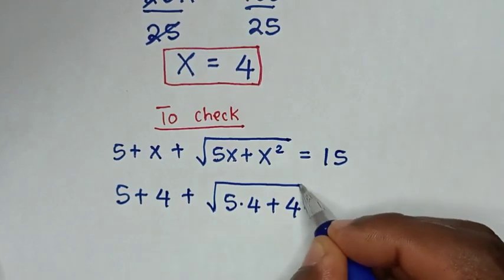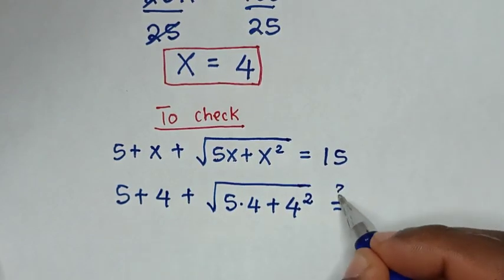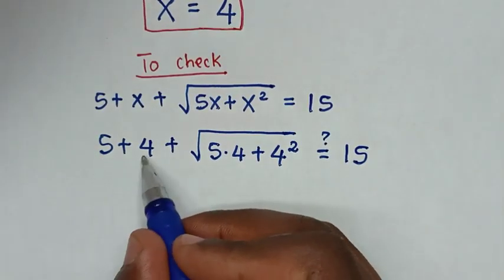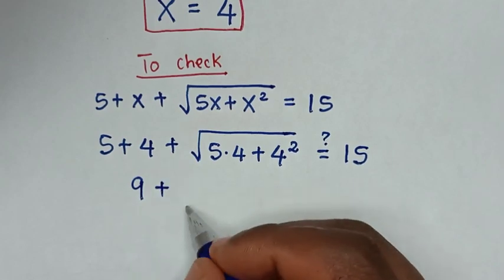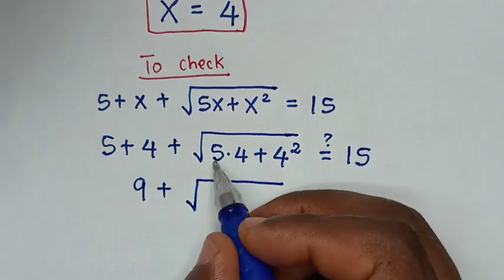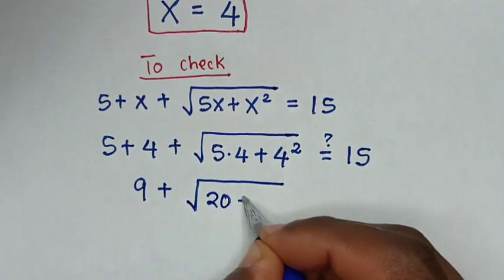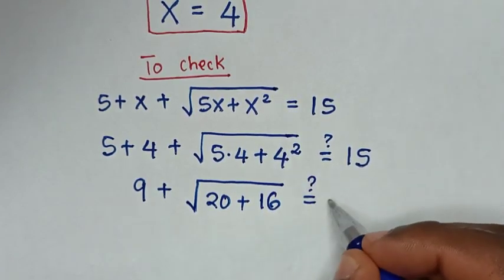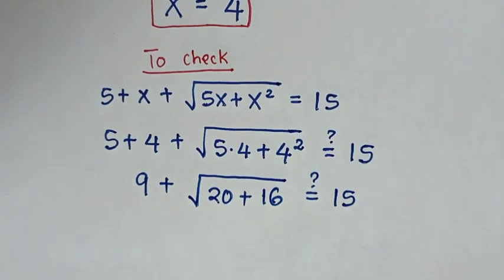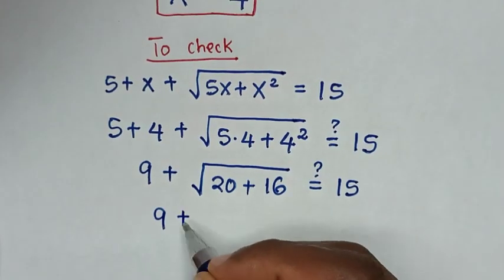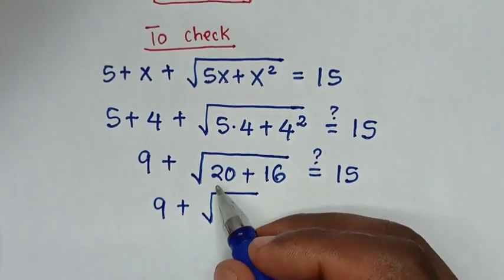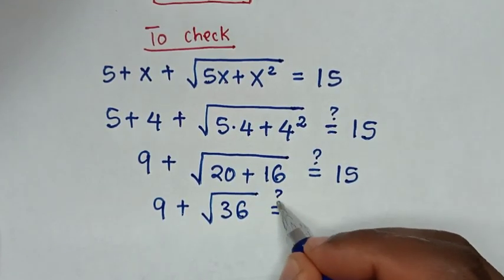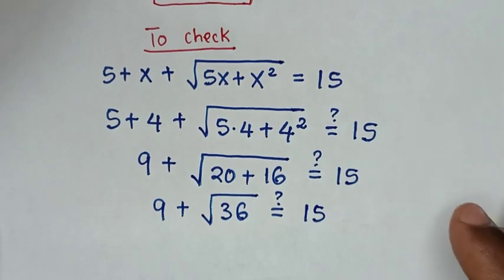is it equal to 15? Then 5 plus 4 is 9, plus square root of 5 times 4 is 20, plus 4 squared is 16, is it equal to 15? It becomes 9 plus square root of 20 plus 16 is 36, is it equal to 15?